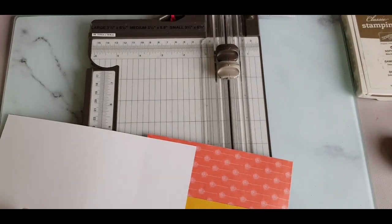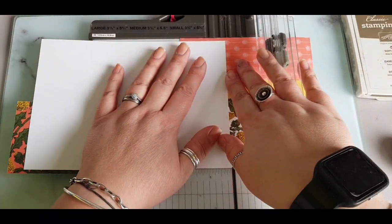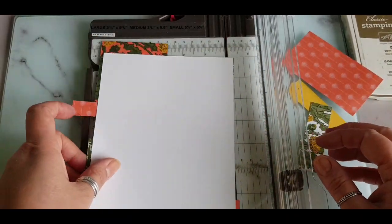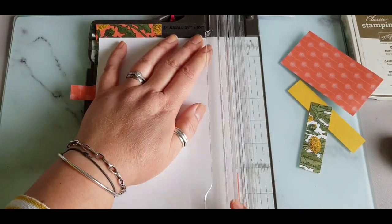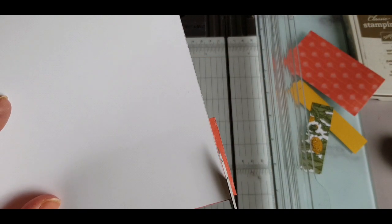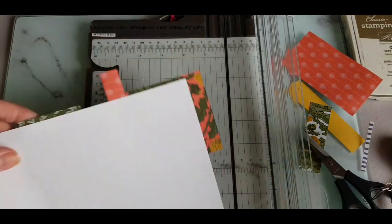So once this is all stuck down you can go ahead and just trim the bulk of it off. Sometimes it's easier with these smaller pieces just to use a pair of scissors to take off any overhanging bits that are tricky to reach if you don't have a flat edge.